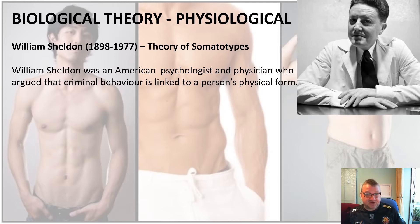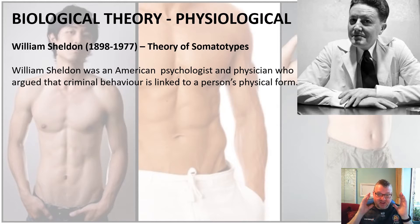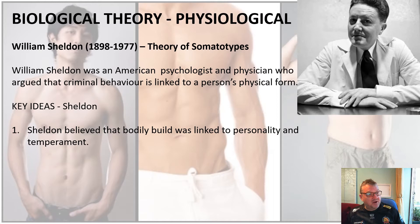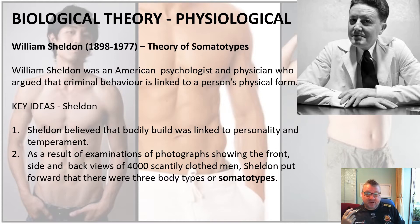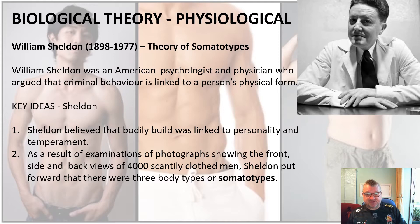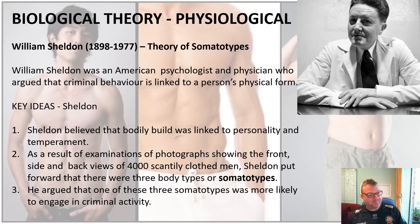Sheldon was an American psychologist, a doctor, a physician, and he argued that criminal behaviour is linked to a person's physical form. Whereas Lombroso was looking at atavistic physical traits, Sheldon looks at body shape. He believed the bodily build of someone was linked to personality and temperament. He examined photographs showing the front, back and side views of 4,000 scantily clothed men, identifying three different body types or somatotypes. He argued that one of these three somatotypes was more likely to engage in criminal activity.